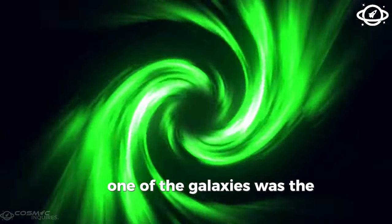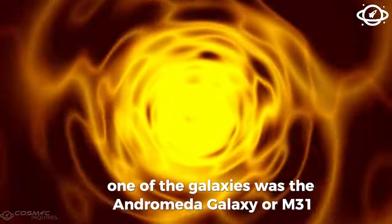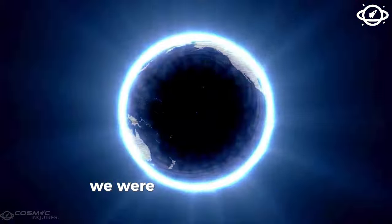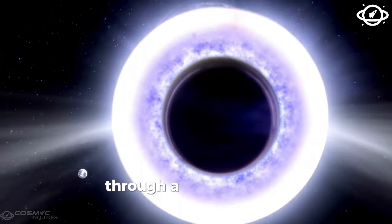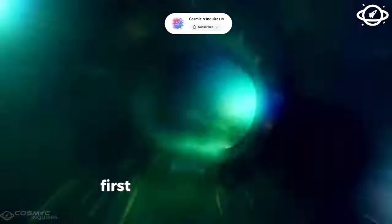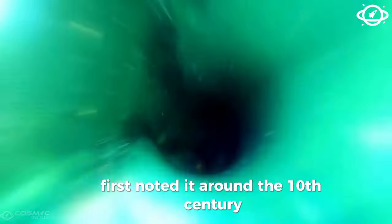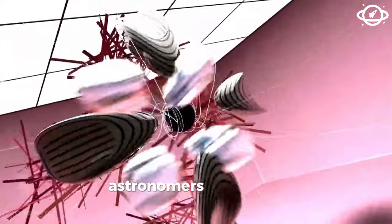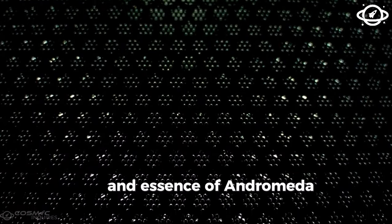One of the galaxies was the Andromeda Galaxy, or M31. While this was the first time we were seeing the Andromeda Galaxy through a telescope, Persian astronomer Abd al-Rahman al-Sufi first noted it around the 10th century. Thanks to technological advancements in the 20th century, astronomers could see and understand the true nature and essence of Andromeda.